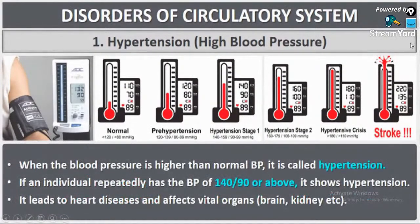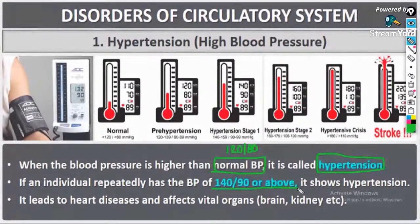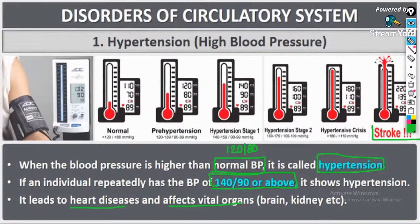When the blood pressure of a person is more than the normal BP of 120/80, it is called hypertension. If an individual repeatedly has a BP of 140 or above, it indicates hypertension. This finally leads to heart disease, affects vital organs, and ultimately leads to a condition called stroke.